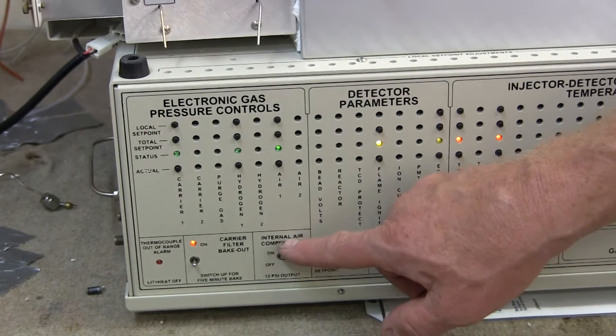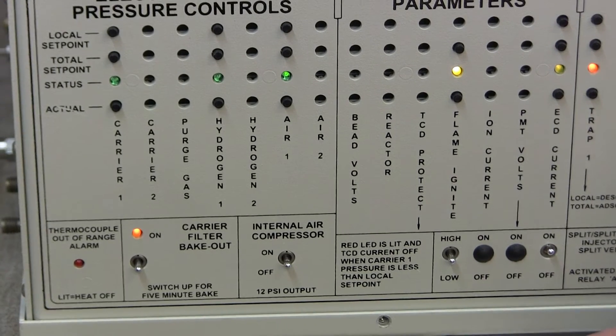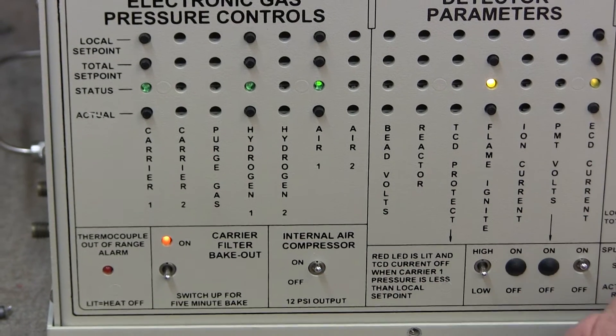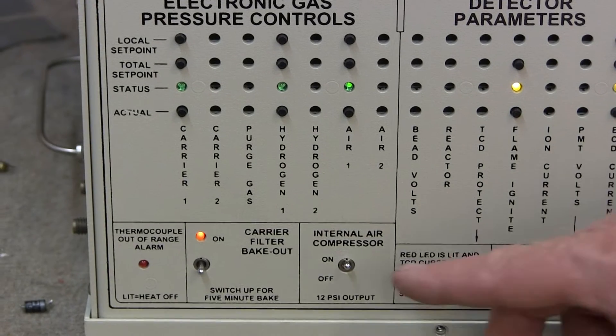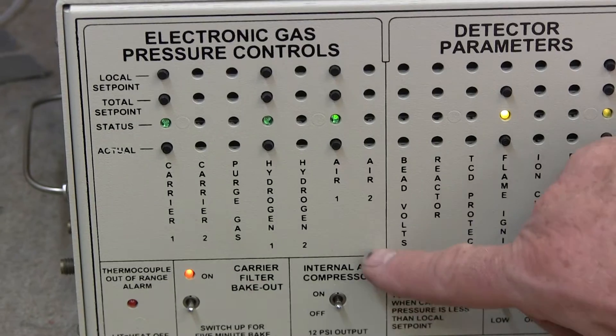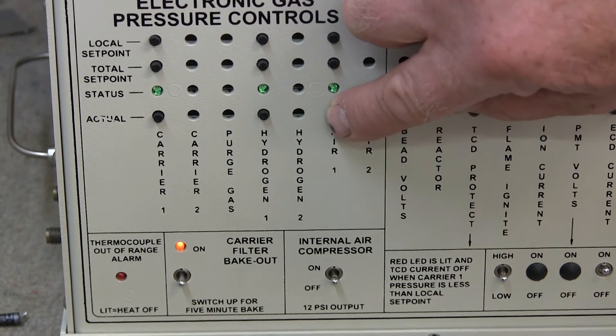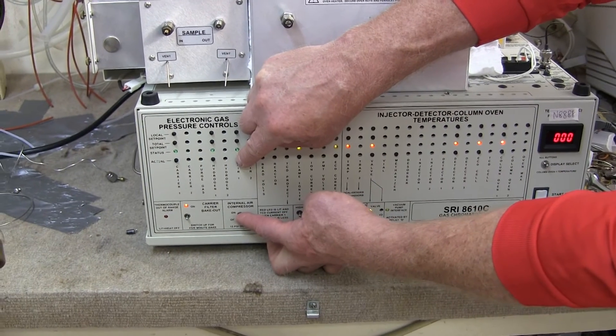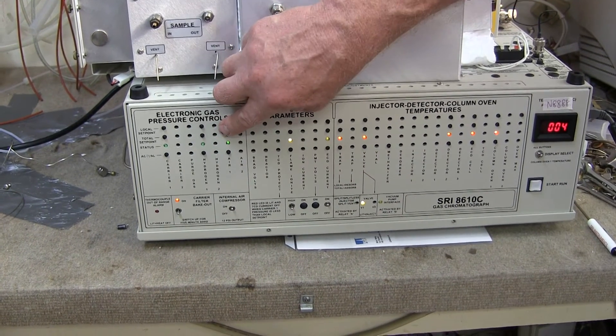This switch here turns on the built-in air compressor. Not all of our GCs have a built-in air compressor, it's an option, but many of them have this. This provides air to the flame ionization detector or some other detectors that also use air. You can't hear the air compressor running, but this turns it off or turns it on. If you turn the air compressor off, then the air pressure actual will bleed down to zero because there's no air to supply it. When you turn the internal air compressor on, then the pressure goes back up to whatever the set point is.